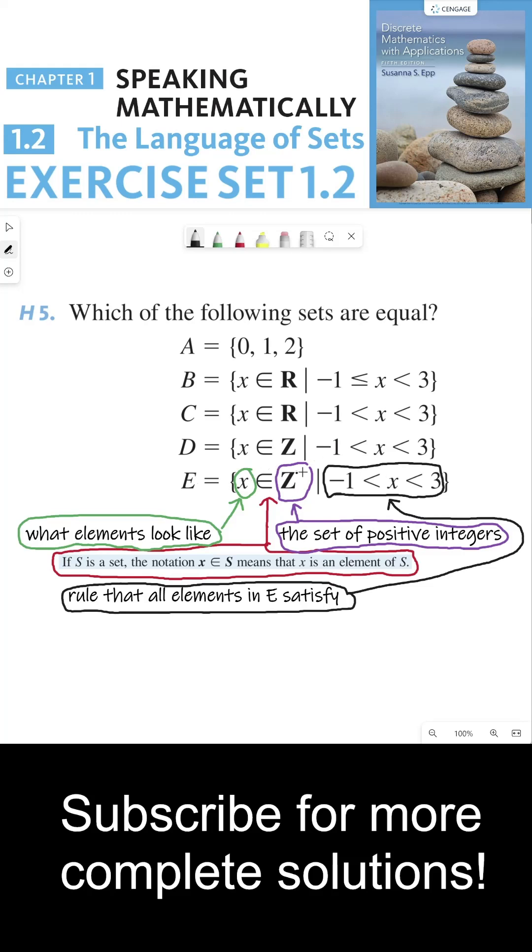Now, we don't want all positive integers in this set E. We have a rule here that restricts which elements we want. And if you notice, we're using X as a variable to create and construct this rule. You might be familiar with this notation that says negative 1 is less than X is less than 3. Now, there are lots of objects that are greater than negative 1 and less than 3.